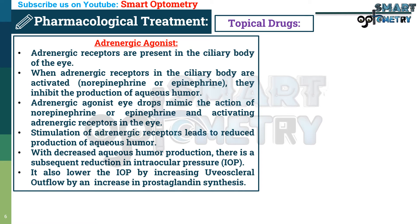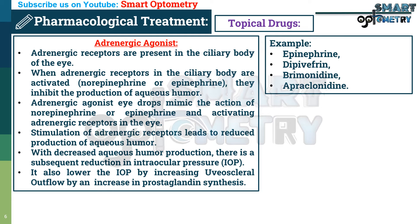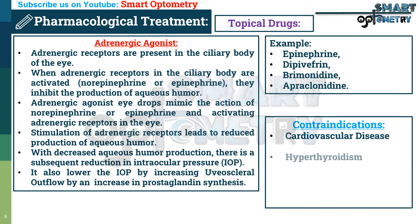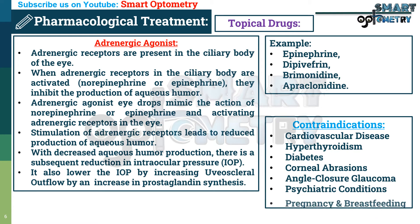Adrenergic agonists also lower IOP by increasing uveoscleral outflow through an increase in prostaglandin synthesis. These are examples of adrenergic agonists. Contraindications of adrenergic agonists include cardiovascular disease, hyperthyroidism, diabetes, corneal abrasion, angle closure glaucoma, psychiatric patients, pregnancy, and breastfeeding.